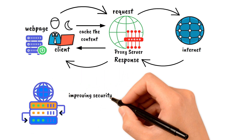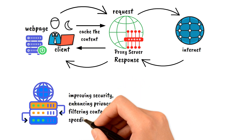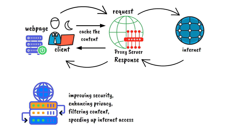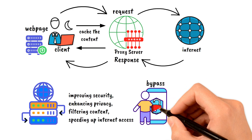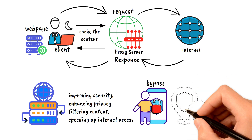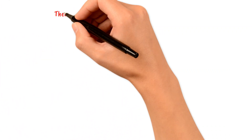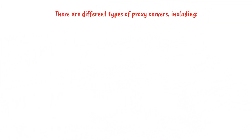Proxy servers can be used for various purposes such as improving security, enhancing privacy, filtering content, or speeding up internet access by caching frequently accessed content. They can also be used to bypass geographic or content restrictions, as they can provide the client with an IP address from a different location. There are different types of proxy servers, including: